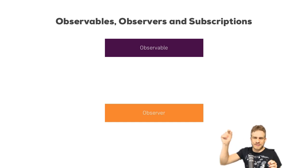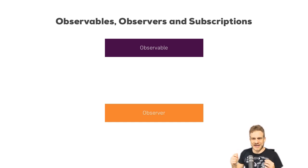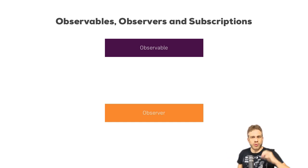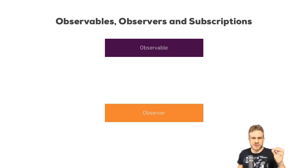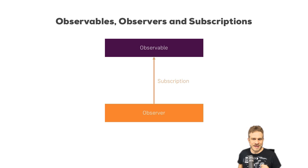So we have that stream of data, possibly asynchronous, with multiple values over time. Whenever a new value occurs, that is the job of the observer. The observer is there to execute some code whenever we receive a new value, or an error, or if the observable reports that it is done. The observer handles that, and we need to connect it to the observable — we do that through a subscription. With the subscribe method, we tell an observable that someone is listening to its values — the observer.